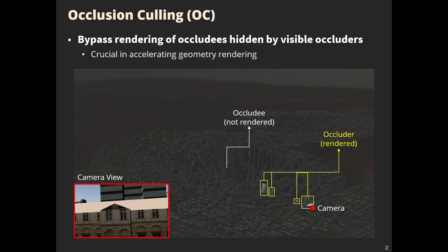Occlusion culling is a process which bypasses rendering of occludees hidden by visible occluders. This process prevents wasted rendering operations, so it's crucial in accelerating geometric rendering.